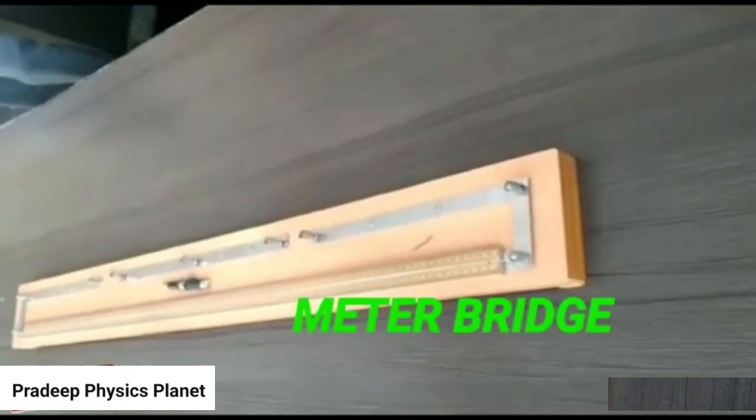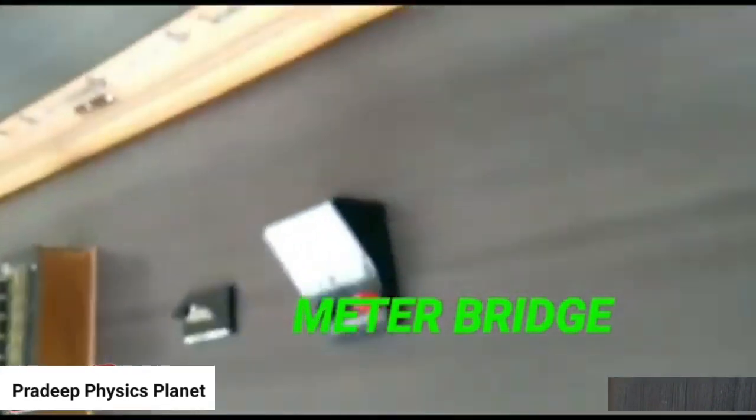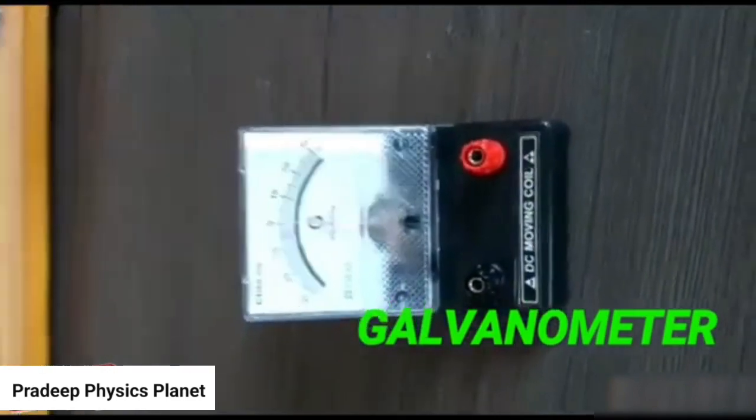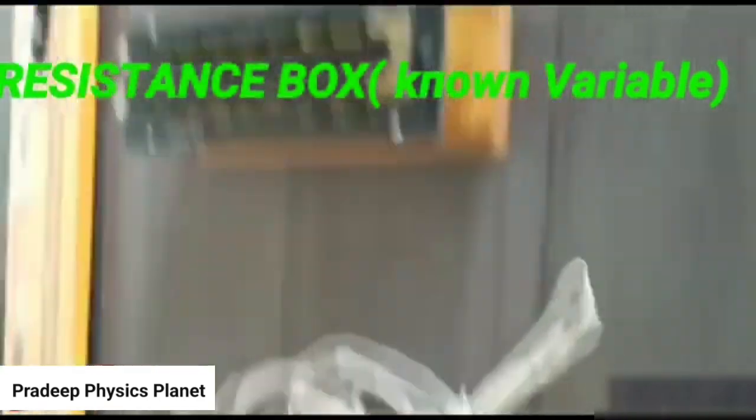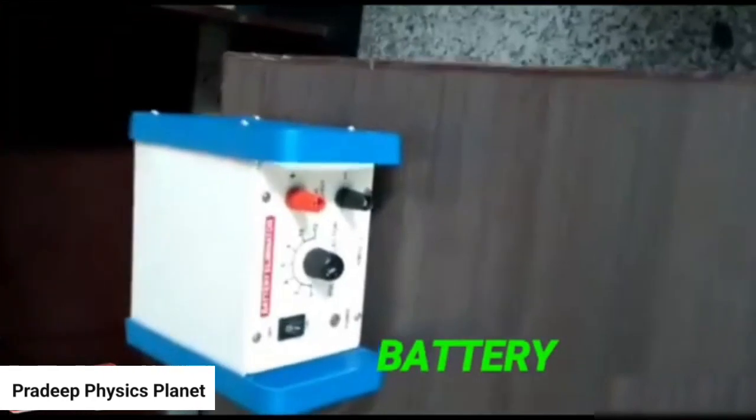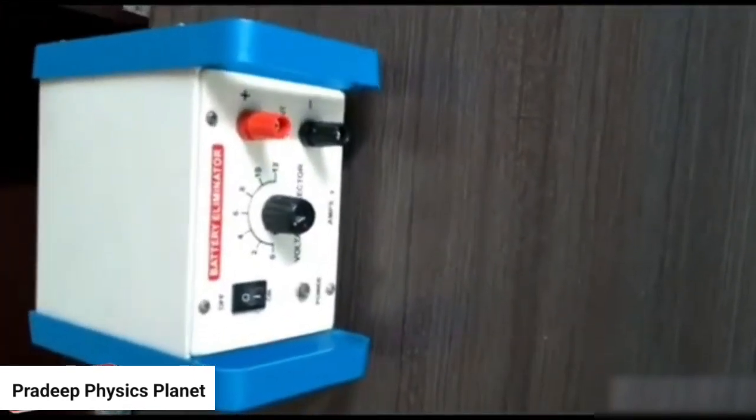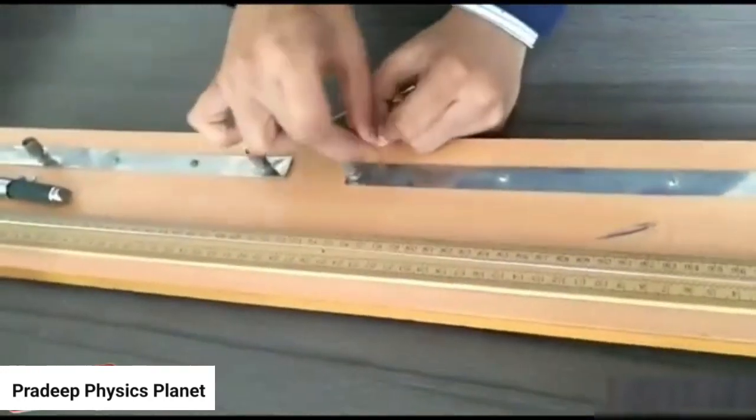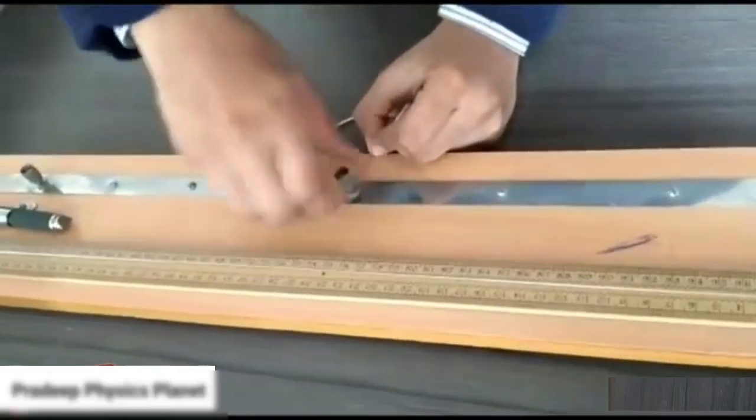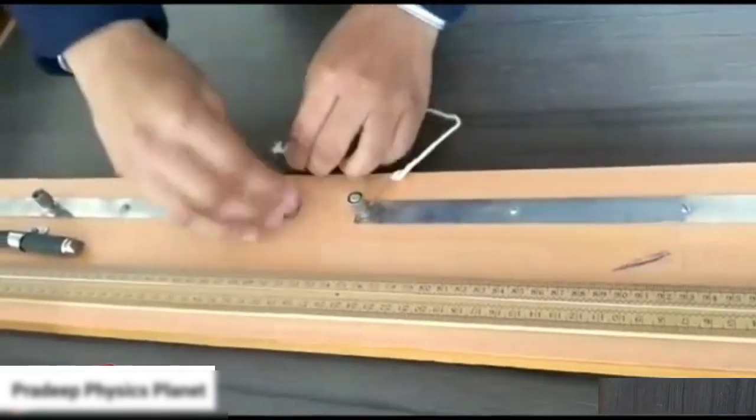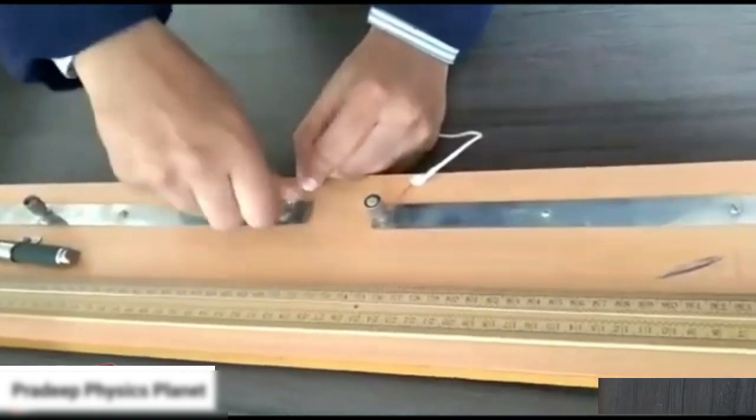Here we have the meter bridge, the galvanometer key, resistance box, some wires, and the battery. Across this, we connect the unknown resistance, the one which we have to find the resistance. This is how we connect across the two terminals.